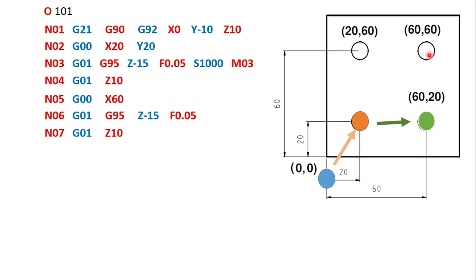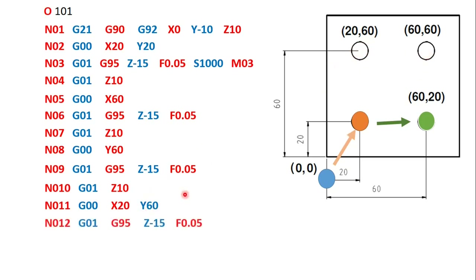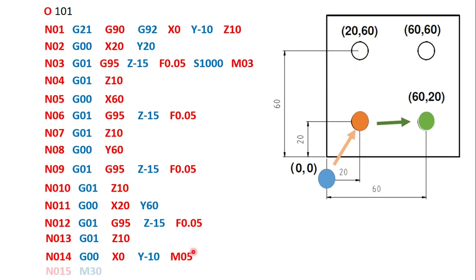For the third hole, only Y is changing from 20 to 60, and X remains 20, so we move to X20, Y60. We again do the drilling operation to Z minus 15, then retract. For the fourth hole at X60, Y60, both X and Y coordinates are defined. After all four holes are drilled and the tool is retracted, M05 stops the spindle and M30 signals the end of the program.